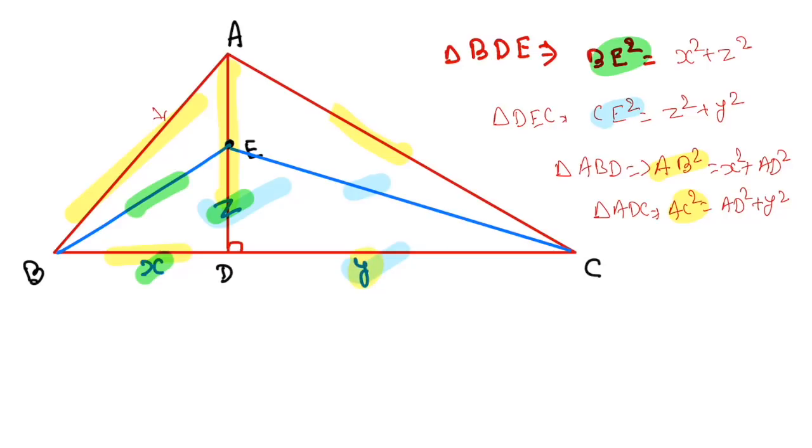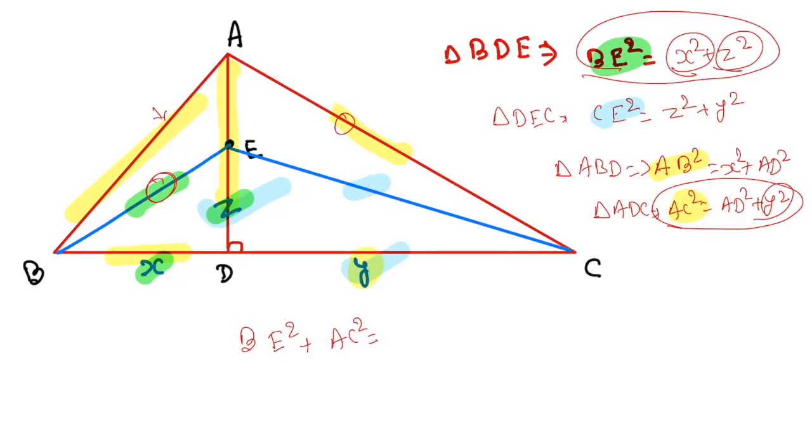Now we need to go for the alternate. So if we ask the BE, if we take the BE along with the AC, BE along with the AC first and fourth and we add. So we can say the BE² plus AC² is nothing but x², z², y², AD². So it is nothing but x² plus y² plus z² plus AD².